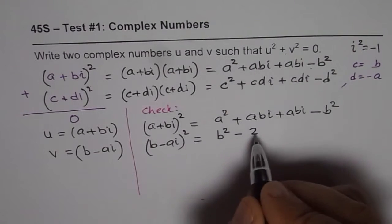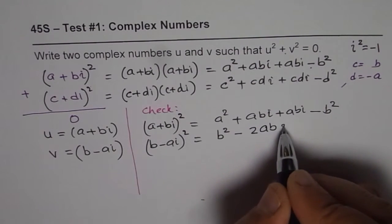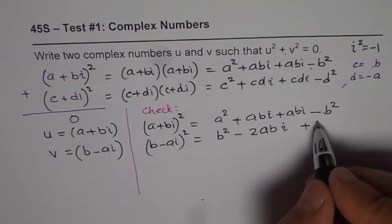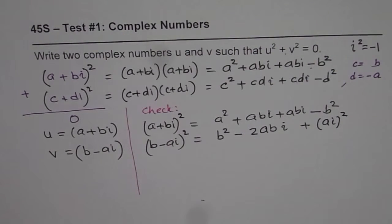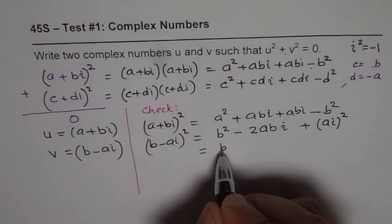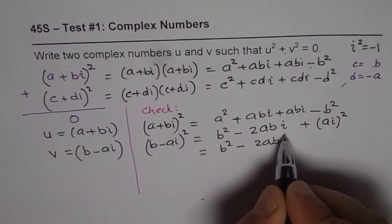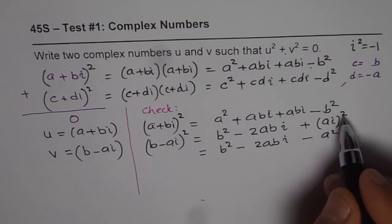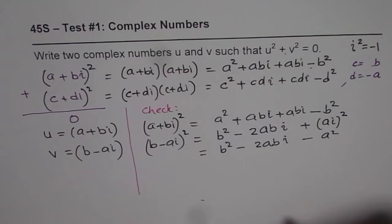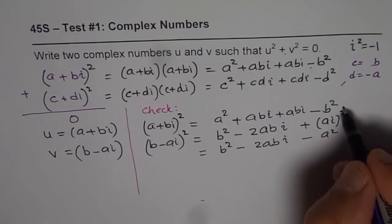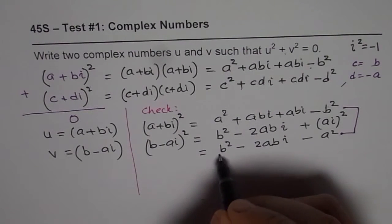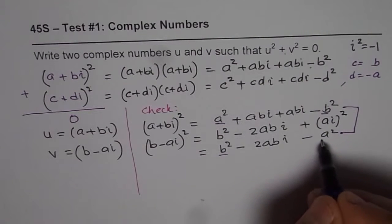That is what you get. Now, let me expand this one. So, b² - 2abi. a² is written a², but i² is negative. So, we get -a².